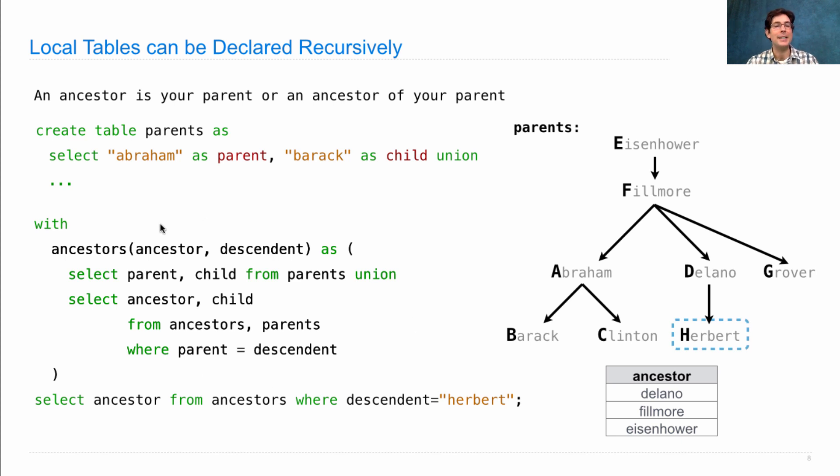Well, what the SQL interpreter has to do is find a fixed point of this description, meaning find all rows that would be added, based on rows that would be added, based on rows that would be added, in order to fulfill the requirements of this select statement.